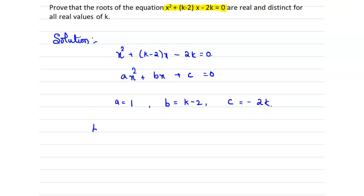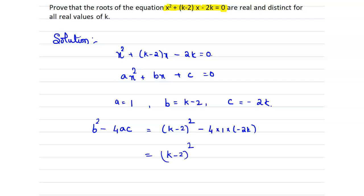Now we find the discriminant: b² - 4ac = (k - 2)² - 4 × 1 × (-2k), which equals (k - 2)² + 8k. Now applying the identity (a - b)² = a² - 2ab + b².